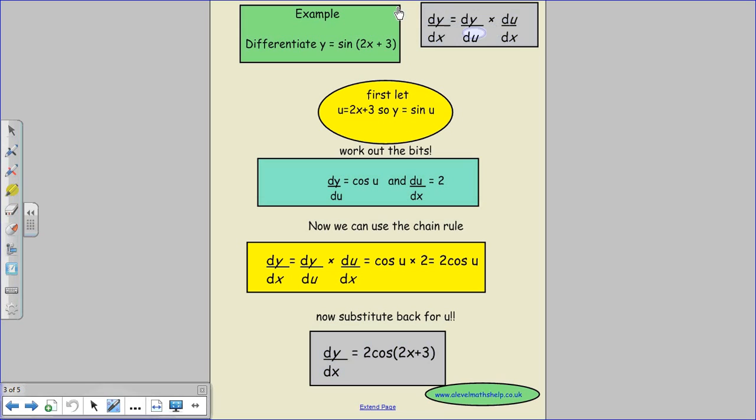If you're not sure about the chain rule then please go and watch the video on it. But the key thing to remember is that when you cross cancel you end up with the same thing you started with, so you just get left with the dy by dx.